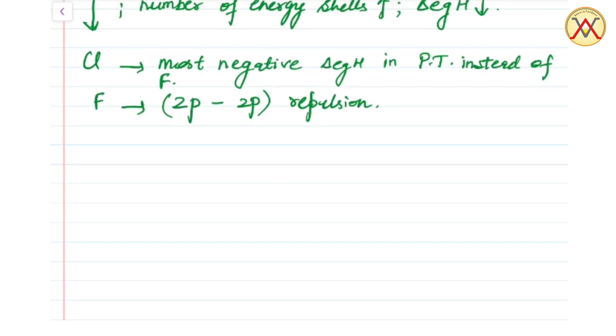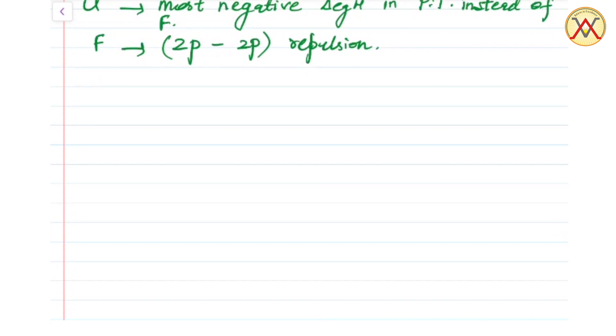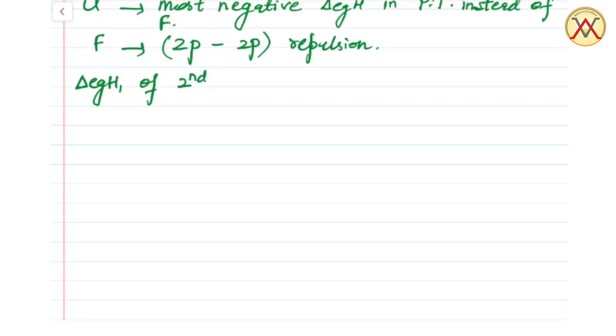So fluorine has less negative electron gain enthalpy as compared to chlorine. So in general we can say that first electron gain enthalpy of second period elements is found to be less negative than first electron gain enthalpy of third period elements.